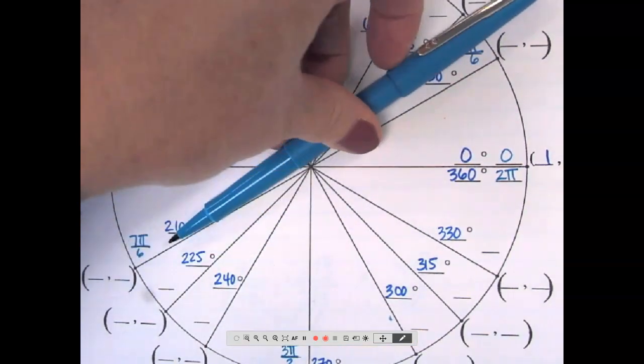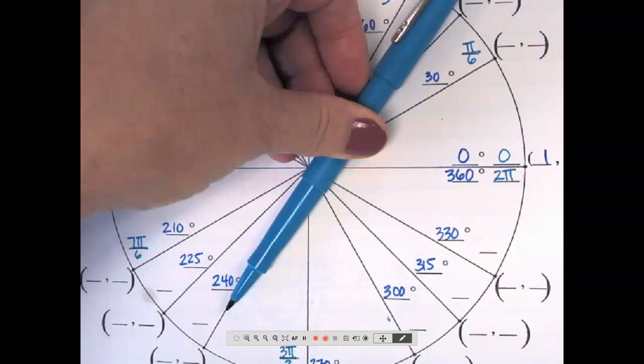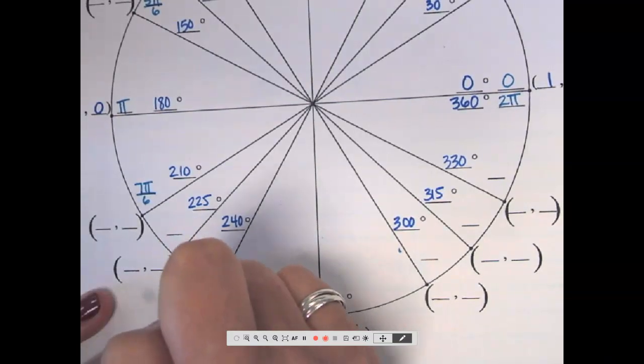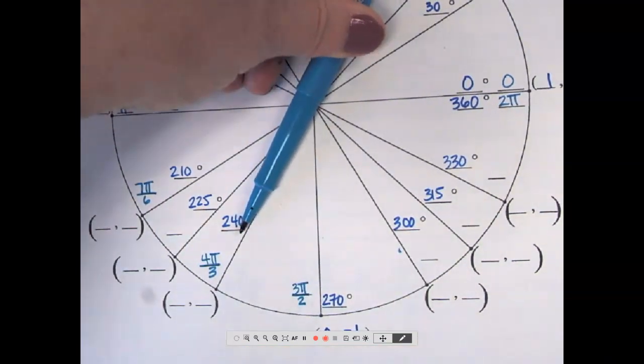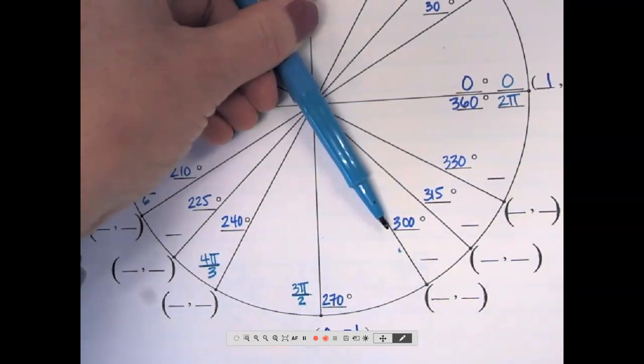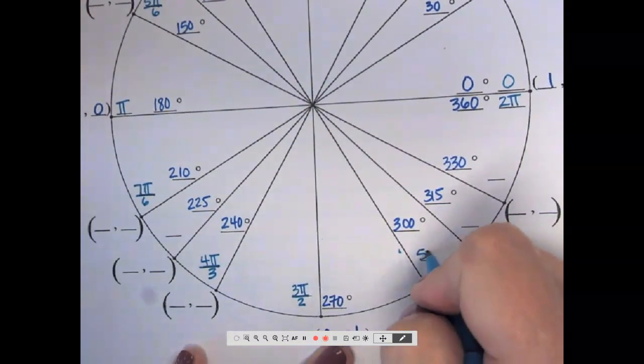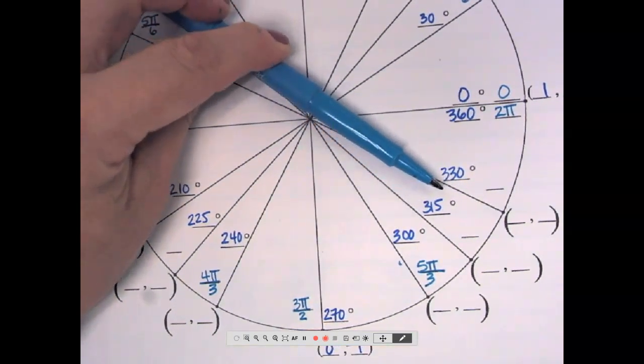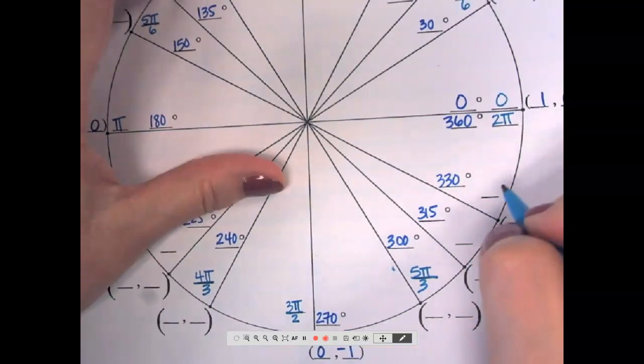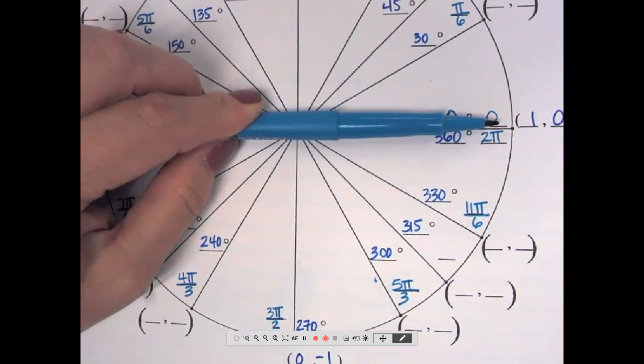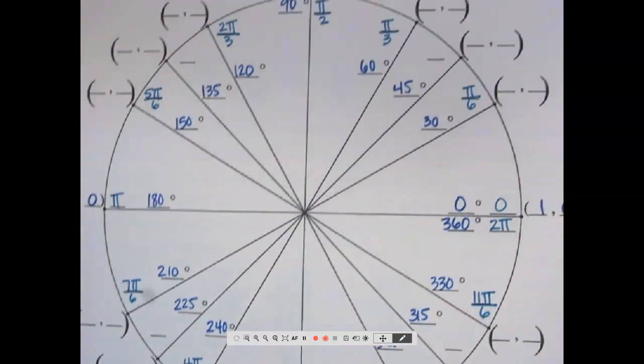Let me skip over. That's 7 sixths. 8 sixths reduces to 4 over 3. So that was 8 sixths. This is 9 sixths, which reduces to what we already had. Then this is 10 sixths. 10 over 6 reduces to 5 over 3. So that was 10 over 6. This is 11 over 6. Doesn't reduce. And this is 12 sixths, which reduces to 2.